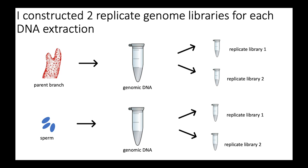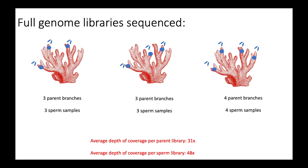We did the same process for each of the sperm — for each sperm DNA extraction, we had two replicate libraries to confirm true mutations. We sequenced full genome libraries for 10 parent branches and 10 sperm pools from those branches, from three different coral colonies: three parent branches from two of the colonies and four parent branches with associated sperm from the third colony. We sequenced to about 31x coverage per library for each of the parent libraries and about 48x coverage for each of the sperm libraries.